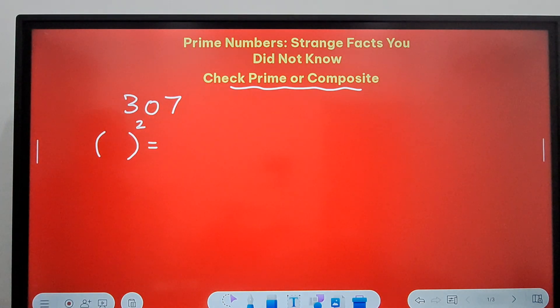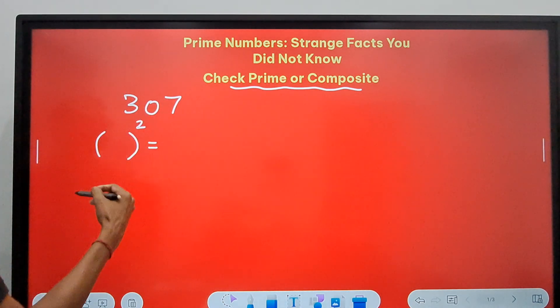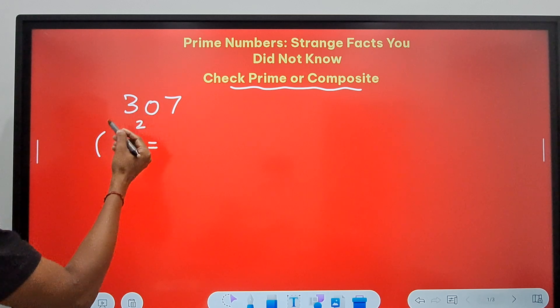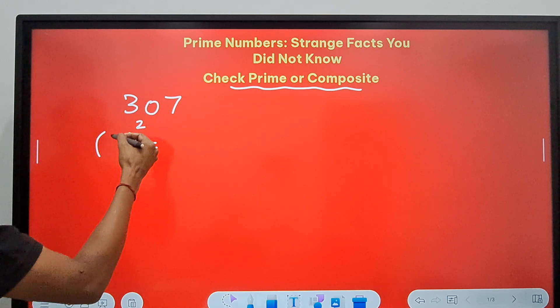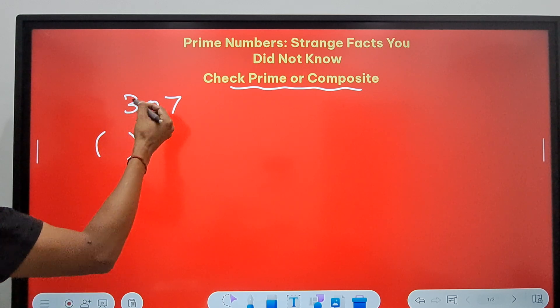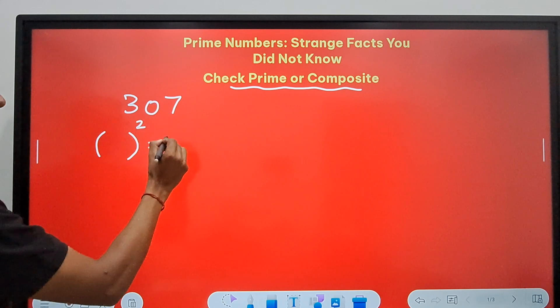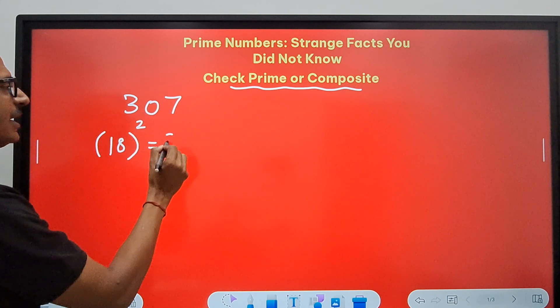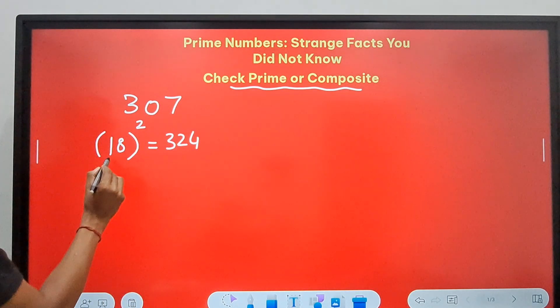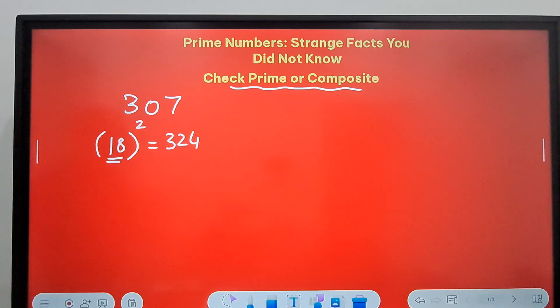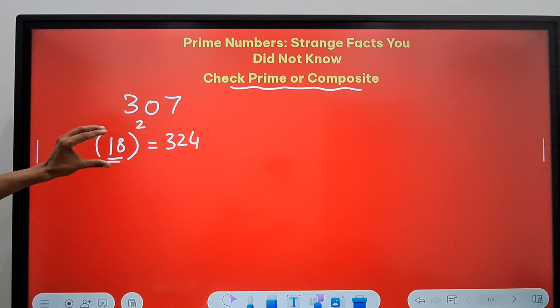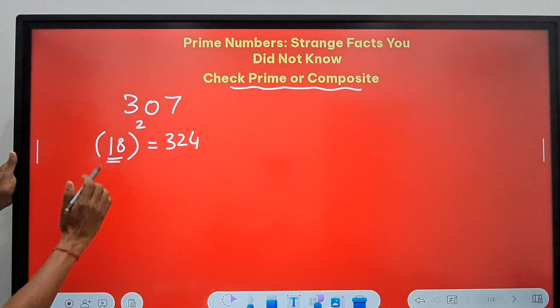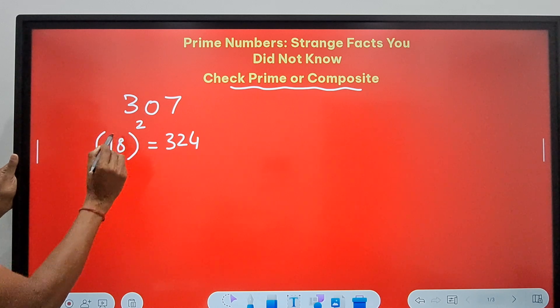So the number whose square is just above 307: 15 square is 225, 16 is 256, 17 is 289, 18 is 324. So 18 square is 324. So I located this number 18 and that's all I need.